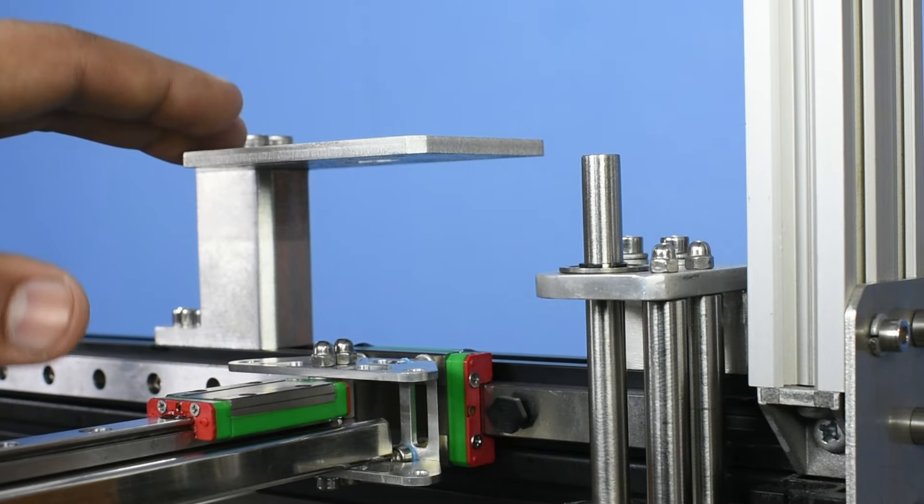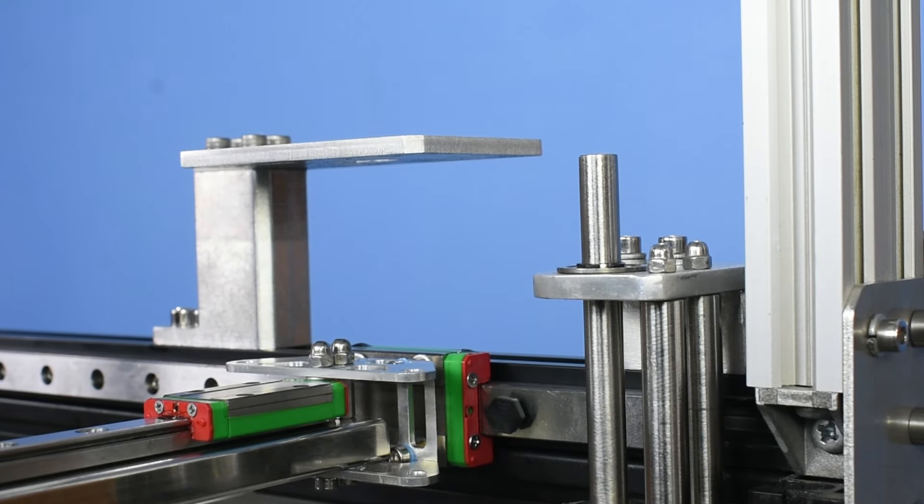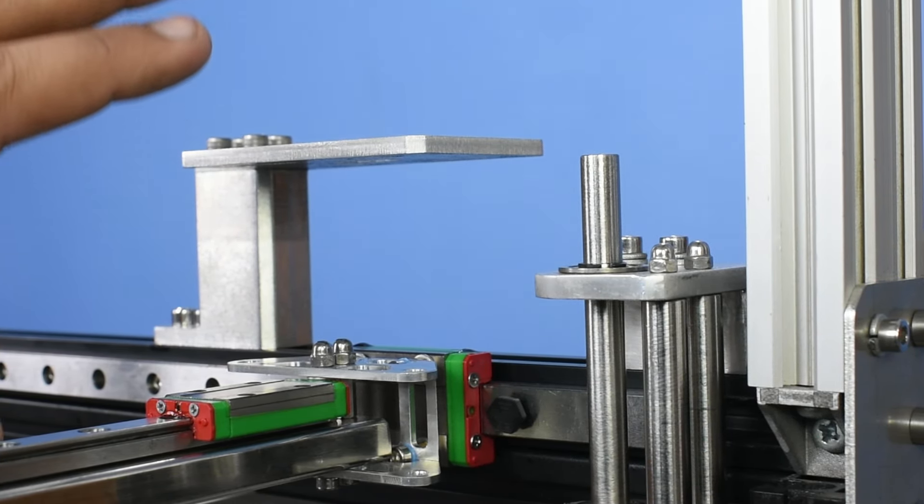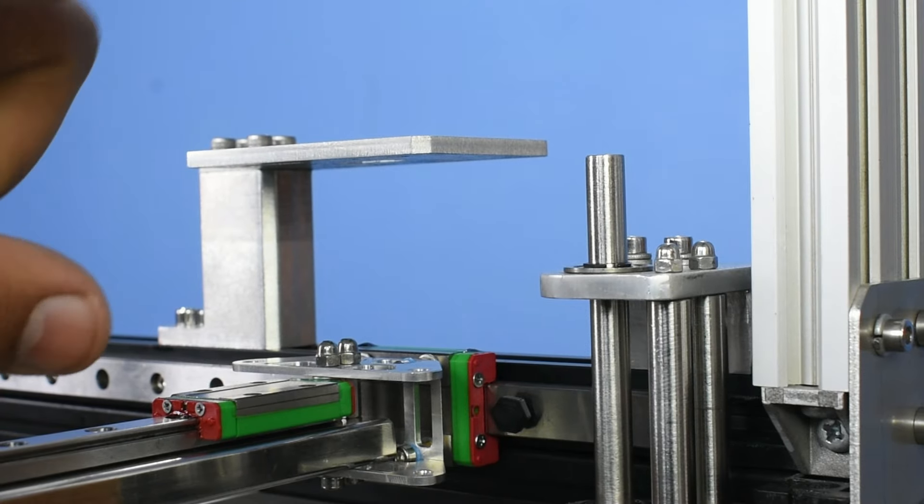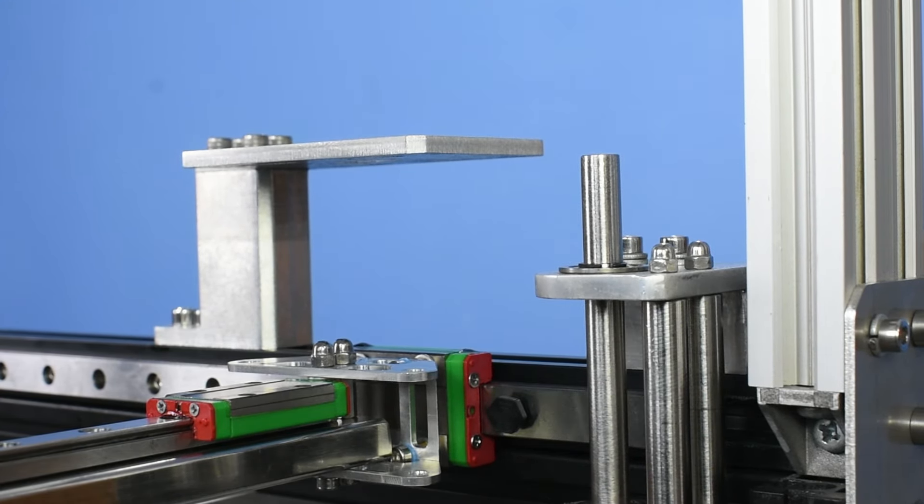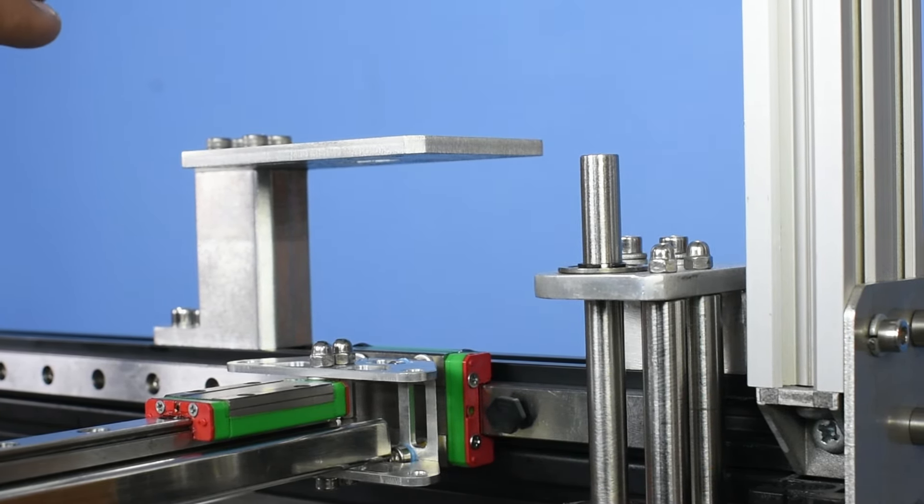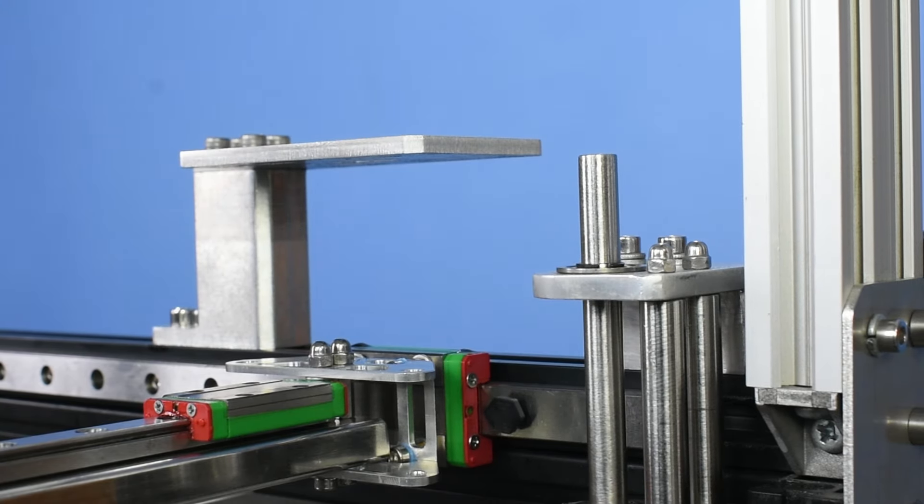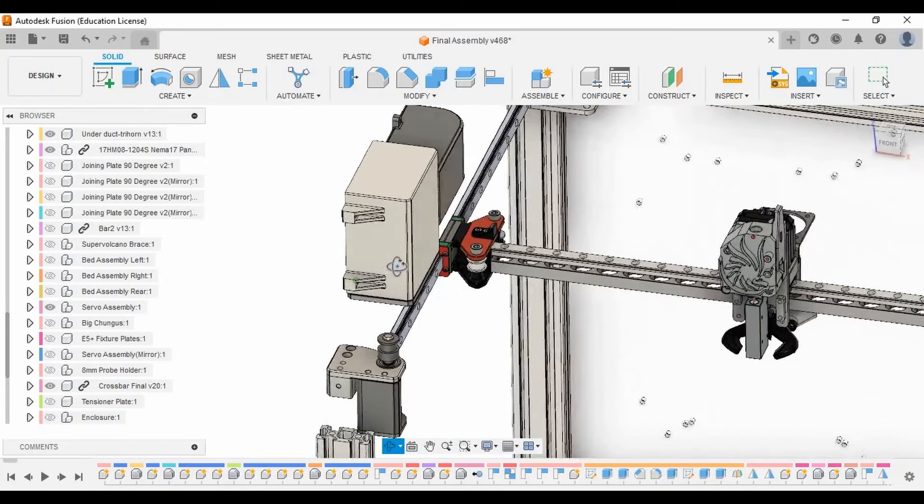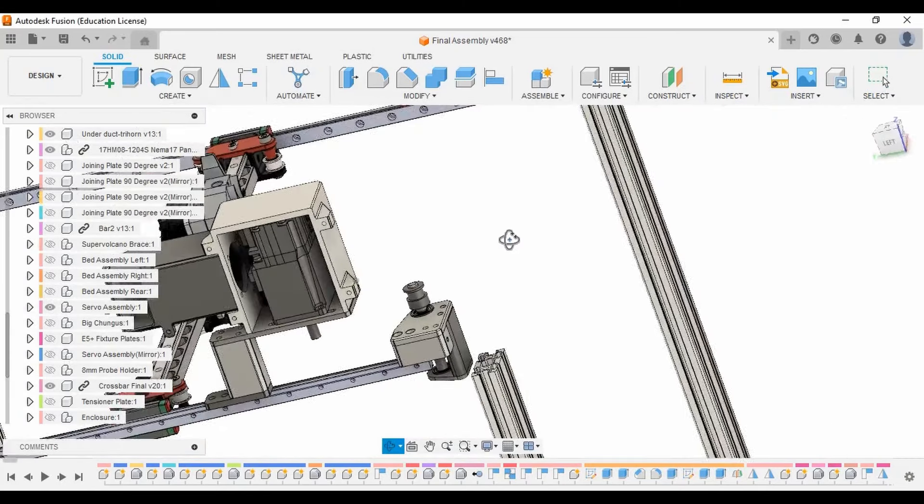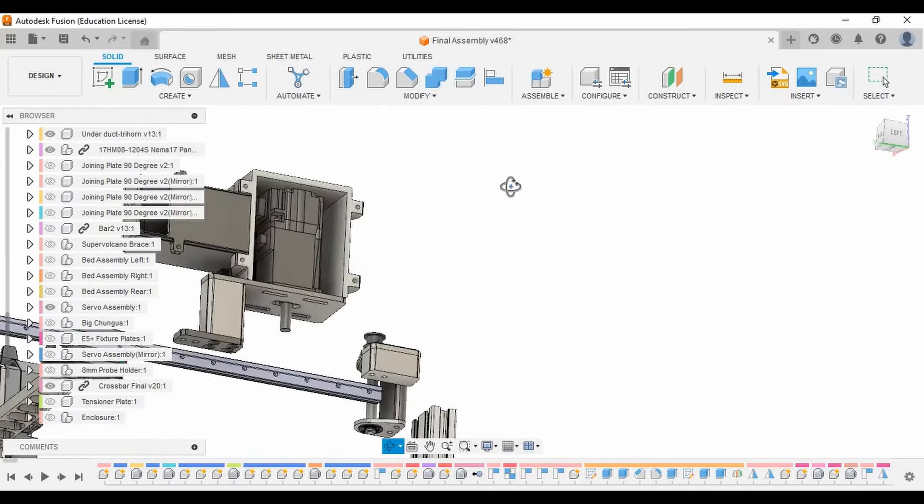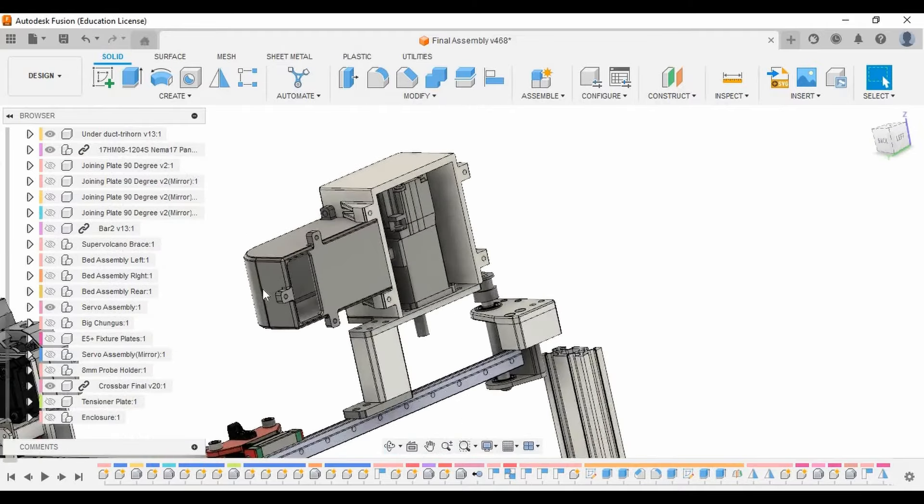What I'm going to do is print an enclosure for the motor and then use a fan to actively cool the servos so they are not affected by the heat of the chamber. Since they are using magnetic encoders, the heat will be detrimental to the readings recorded by the encoder.